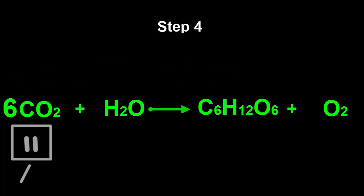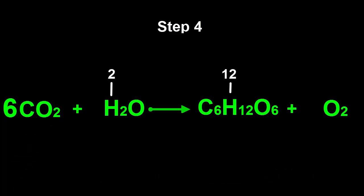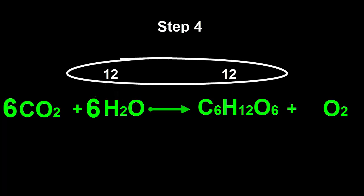Step 4: There are two hydrogen atoms on the left-hand side, and twelve on the right-hand side. Put a six in front of the H2O, making twelve hydrogen atoms on the left-hand side as well. Hydrogen is now balanced.